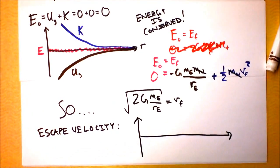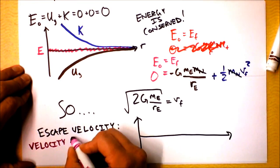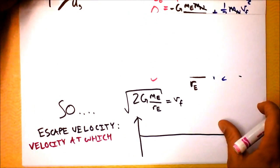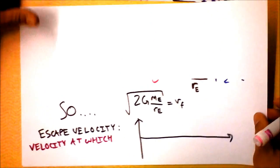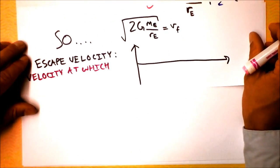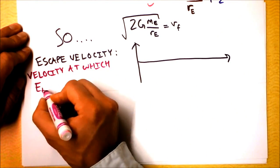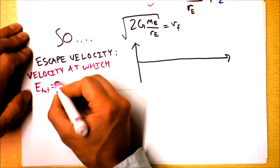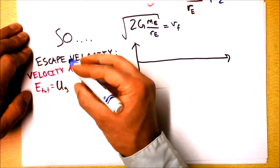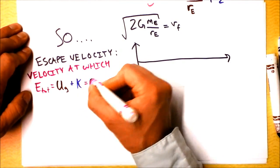Escape velocity is the velocity at which energy total equals - well, energy total means gravitational potential plus kinetic - I want the total energy to equal zero.